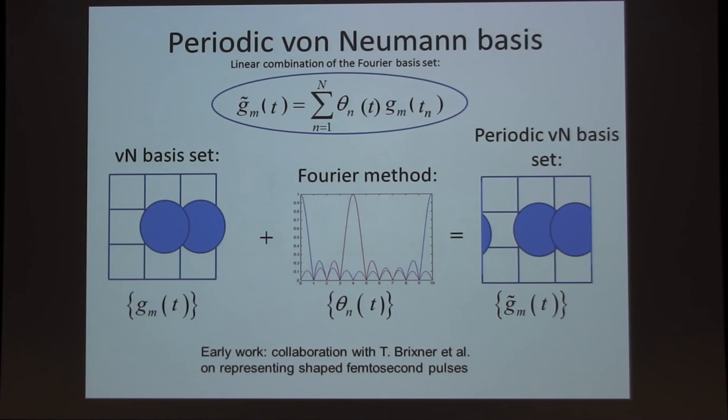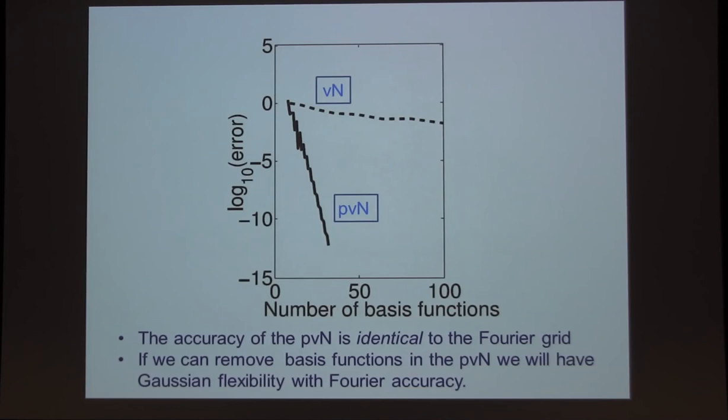So this is to show you the remarkable effect on convergence of these periodic boundary conditions. This is the von Neumann basis without the periodic boundary conditions. This is the log of the error as a function of increasing the number of basis functions using a rectangular geometry. You can increase and increase the number of basis functions, the size of that rectangle, and you essentially never converge with the von Neumann. If you use periodic boundary conditions, you converge like a rock. You get an exponential convergence. This is exactly the same convergence that you would get if you used the fast Fourier method, which many people in the room, I think, have used for both quantum static calculations and quantum dynamics calculations. So what we have now is a method which has Fourier accuracy but Gaussian flexibility.